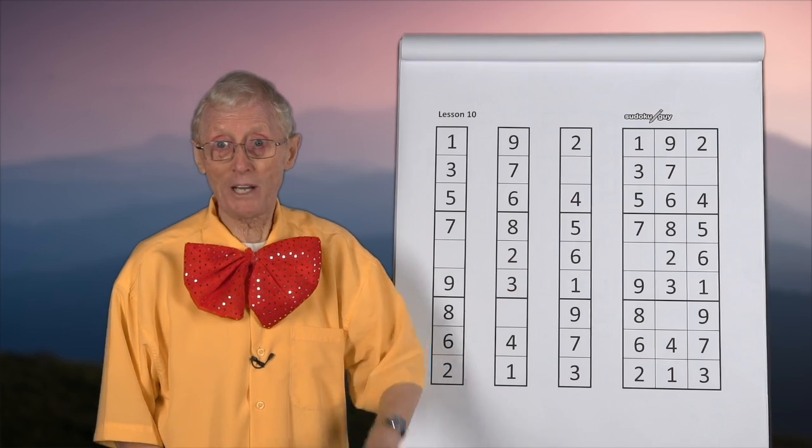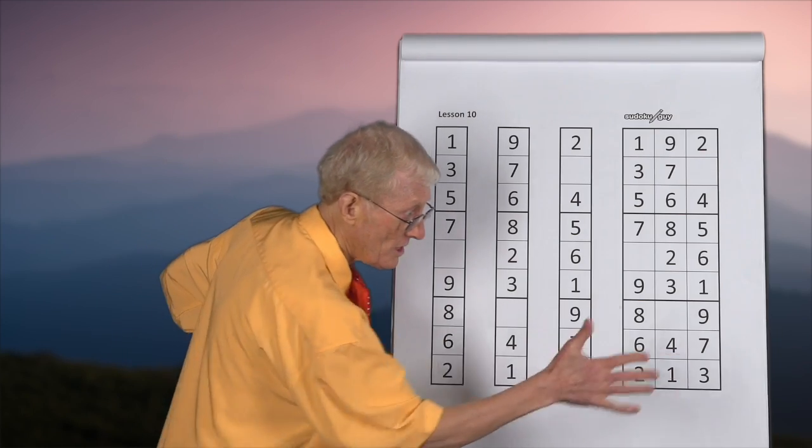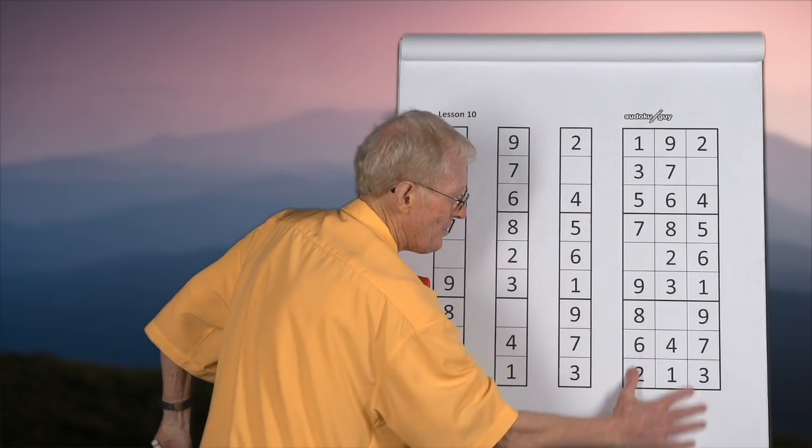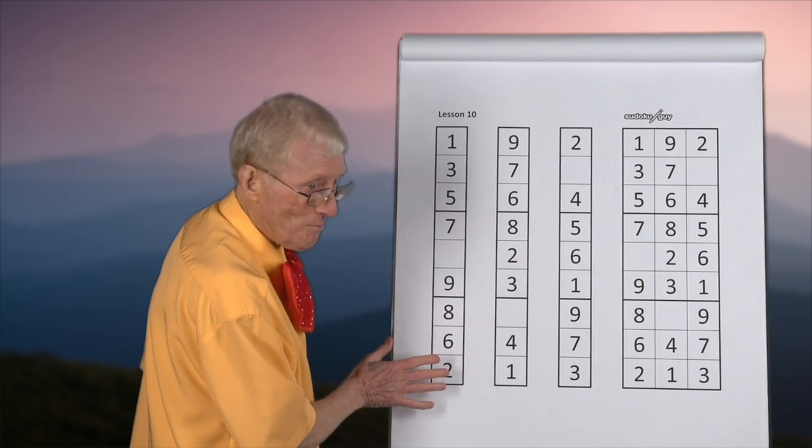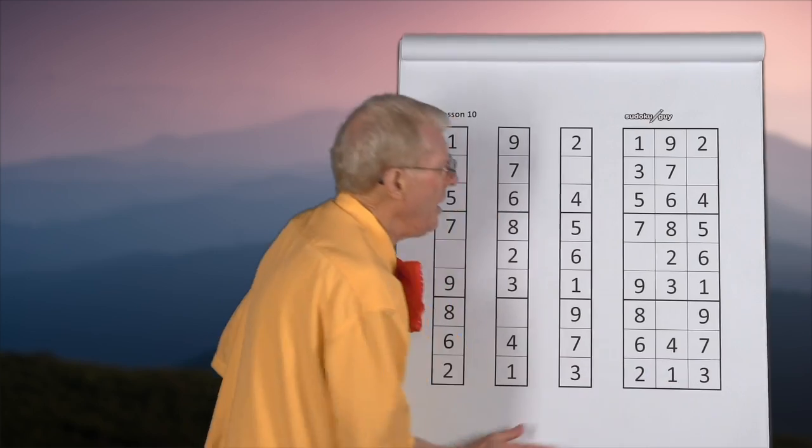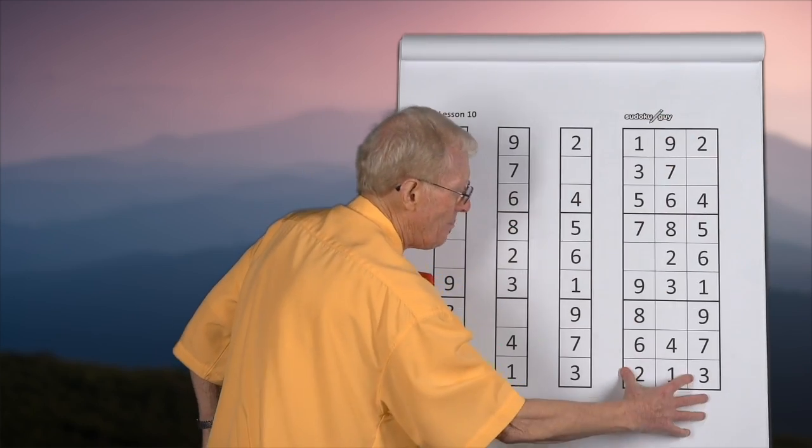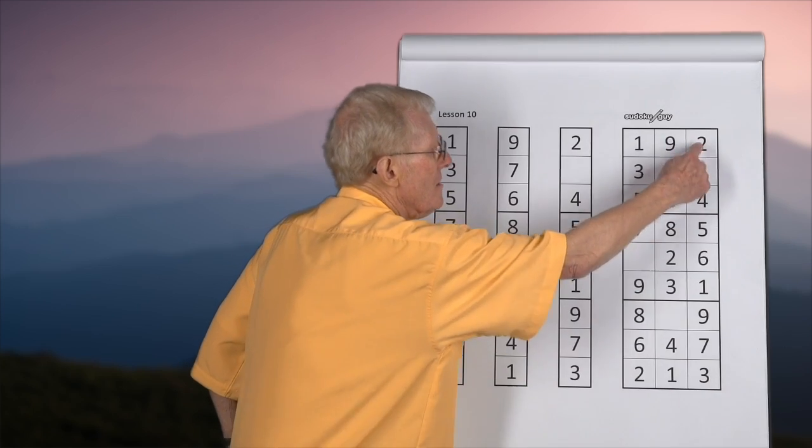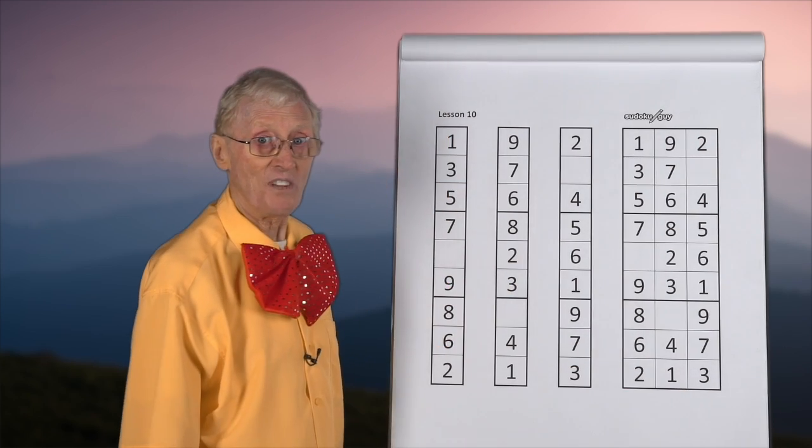Remember last time I talked about horizontal blocks? Now when it's vertical blocks, it means it goes from the top down to the bottom. Horizontal blocks go across the page, vertical blocks go down the page, and they are made up of three columns of nine.